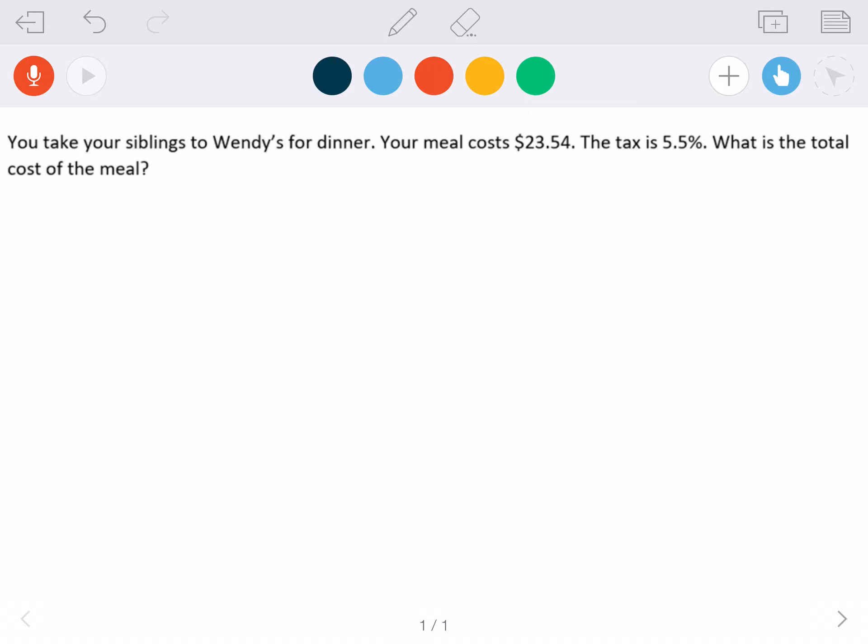Take your siblings to Wendy's for dinner. Your meal costs $23.54. The tax is 5.5%. What is the total cost of the meal?